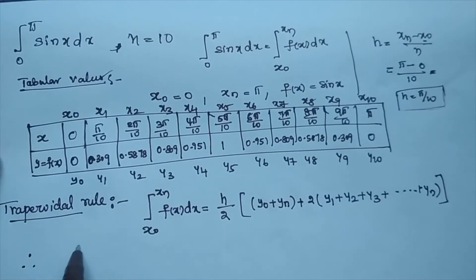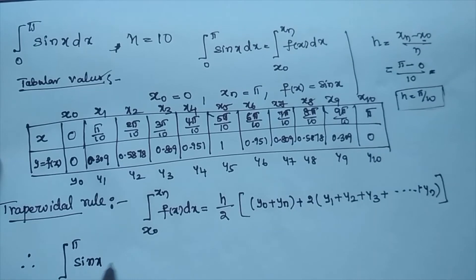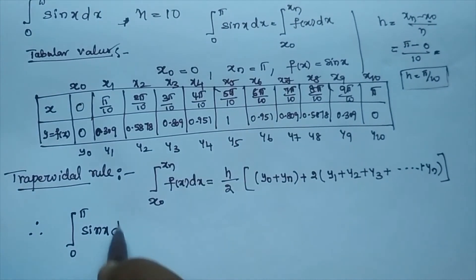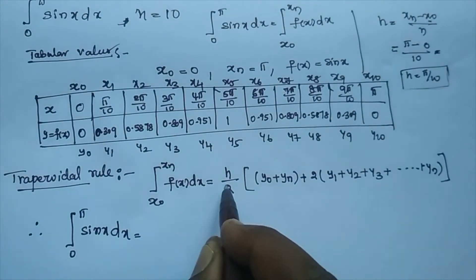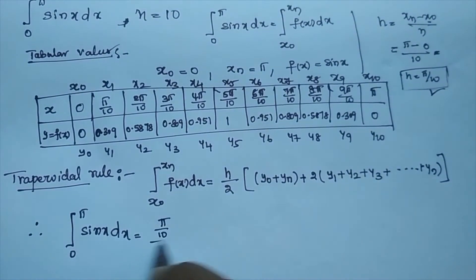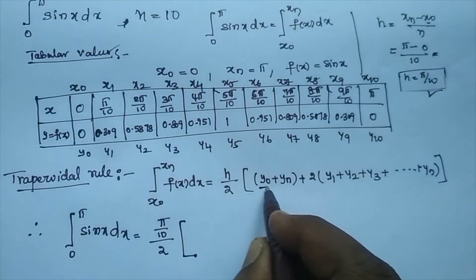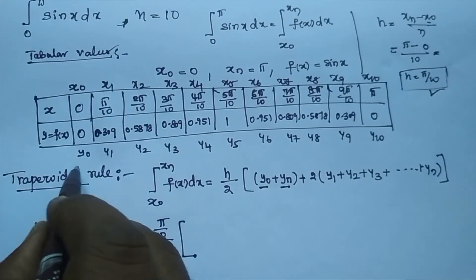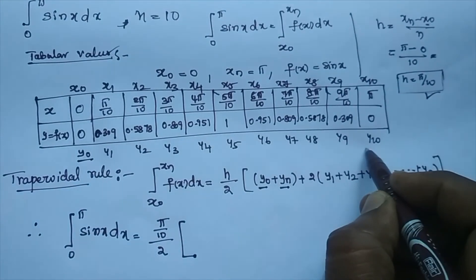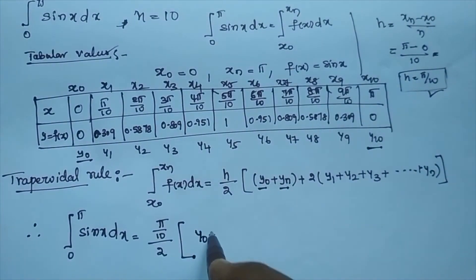So applying our problem: integral 0 to pi sin x dx is equal to... what is the h value? Already we calculated pi by 10. Pi by 10 by 2 equals pi by 20. First observation plus last observation: here first observation is y0 and last observation is y10. So y0 plus y10.